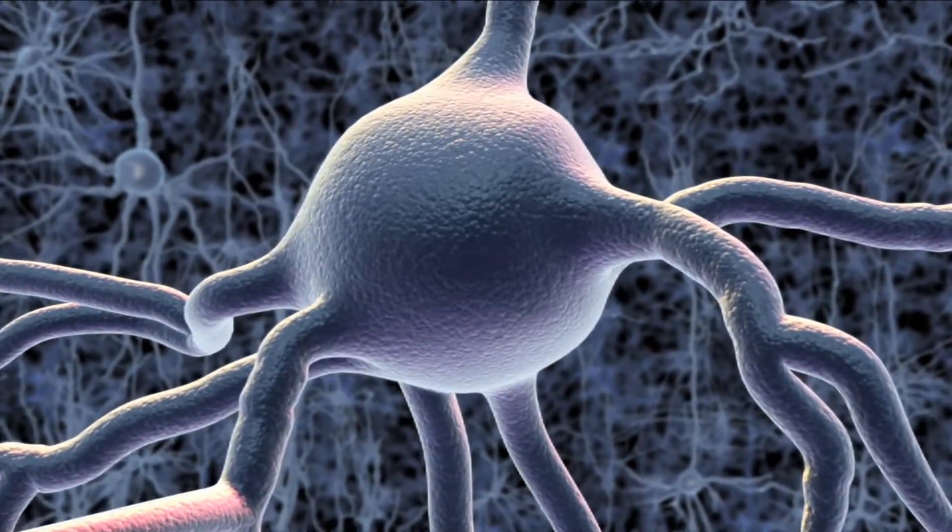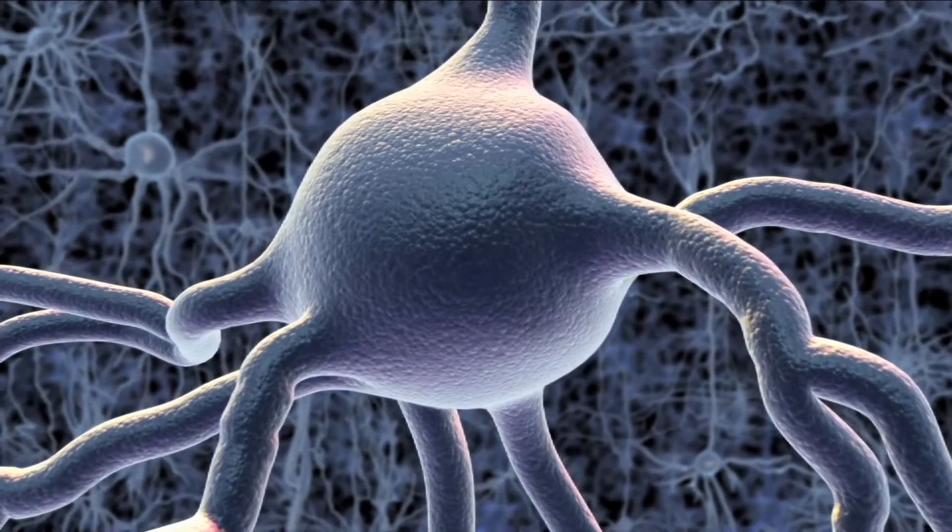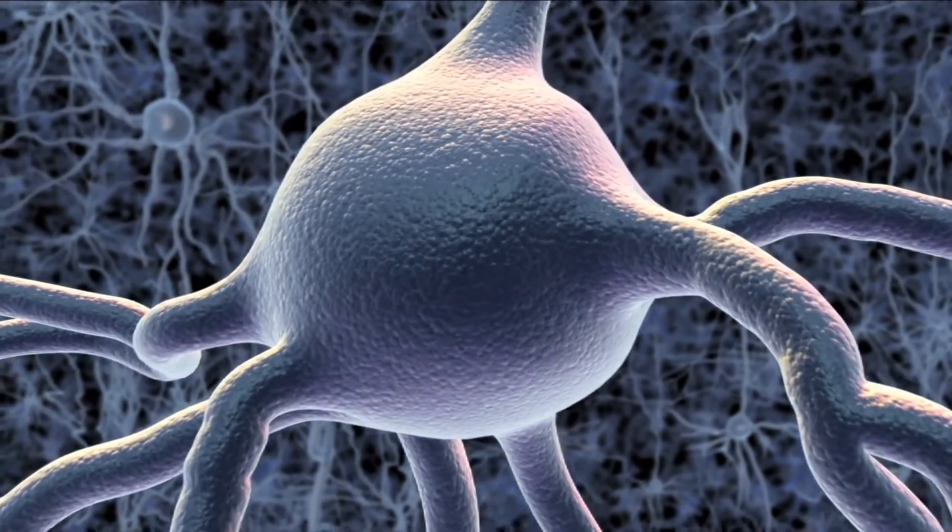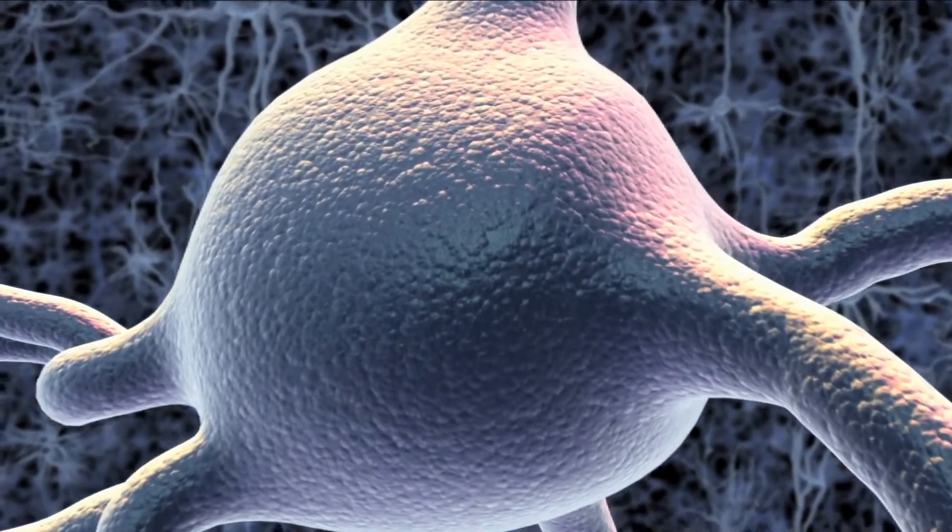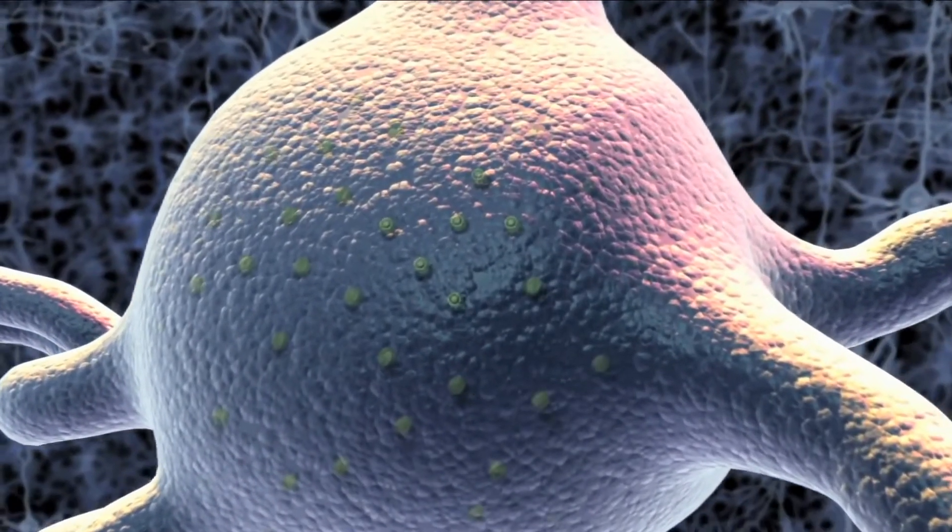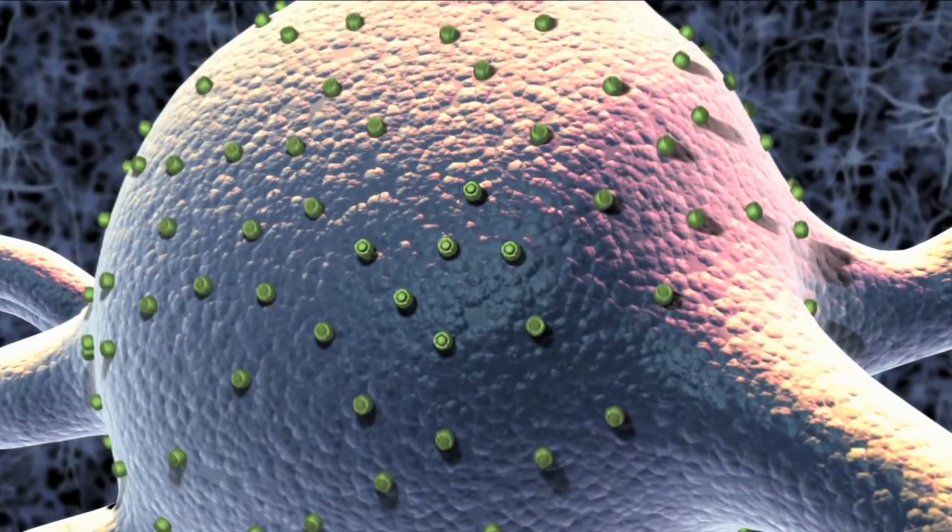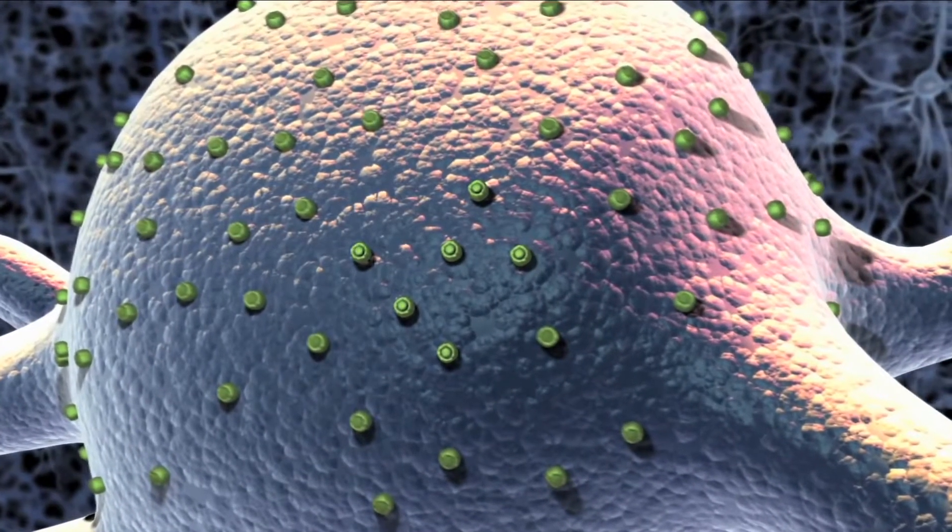it into neurons using a safe and effective method for delivering a gene - the same kind being used in human gene therapy trials. The neurons expressed the DNA, manufacturing copies of the channelrhodopsin protein and installing them in their membranes.